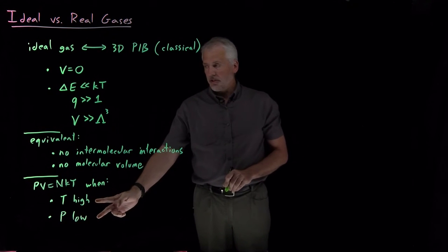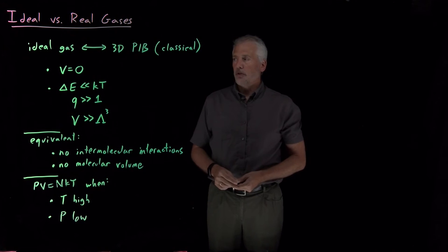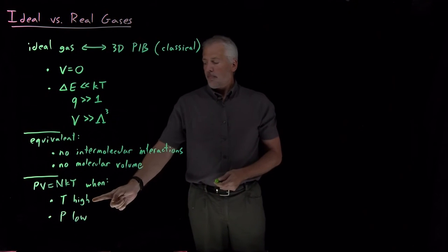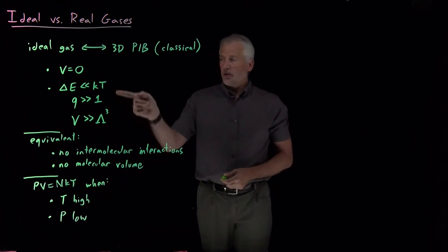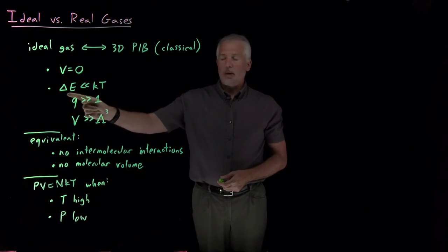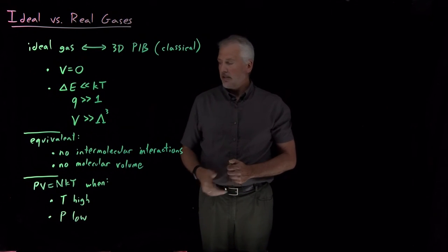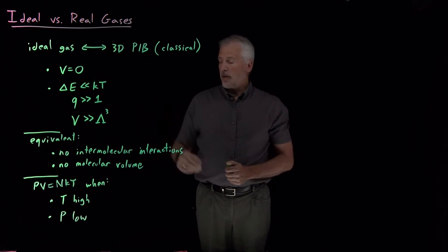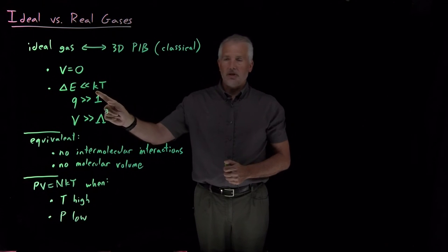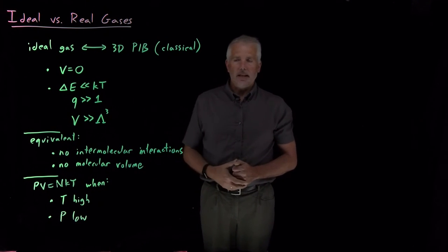Again, those conditions can be related to what we've now discovered for our version of the ideal gas law. Saying that the temperature must be high is equivalent to this condition where we say k times T has to be bigger than some inherent property of the molecules. Whatever the energy level spacing in the molecules is for the particle-in-a-box model, we need a temperature such that kT ends up quite a bit bigger than that.